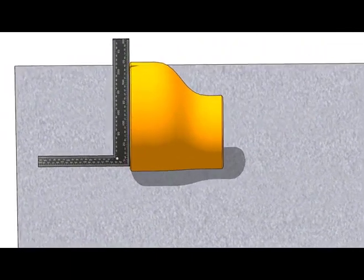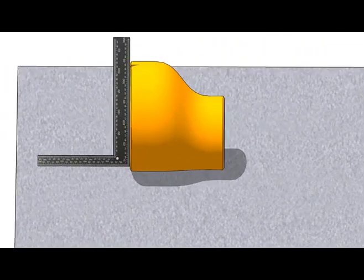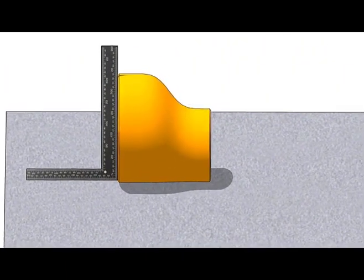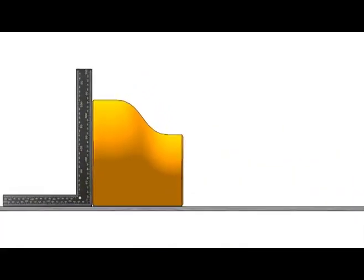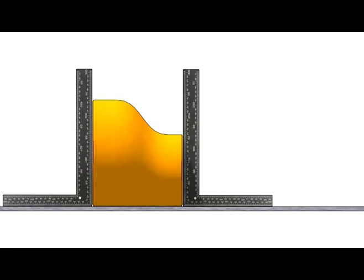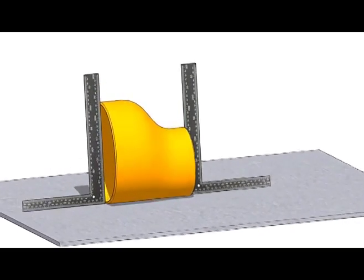Hold a right angle on the large side of the reducer as shown. Roll the reducer back and forth until the face of the reducer touches the right angle properly. Now check the other end with another right angle. If the right angle touches the face properly, the reducer is almost okay.